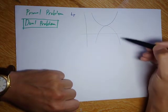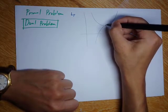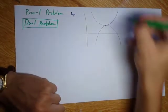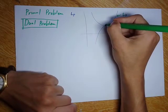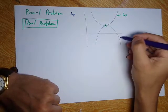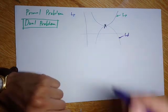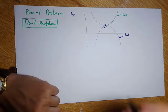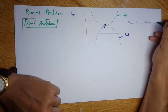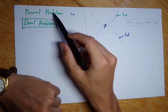The minimum of the primal function is at a certain point, and the maximum of the dual curve — shown here in another color — is also at the same place. In other words, the minimum of the primal problem corresponds to the maximum of the dual problem. So what we want to do is transform the primal problem into a dual problem and then maximize the dual instead of minimizing the primal.